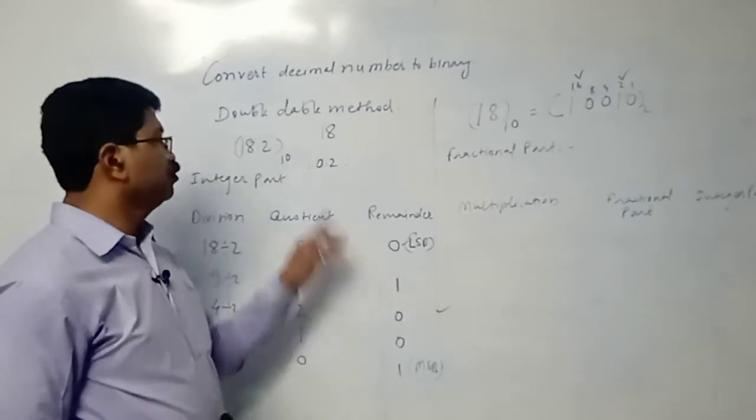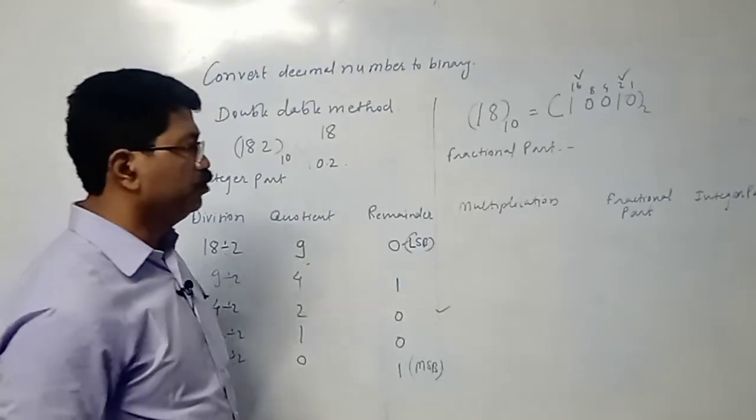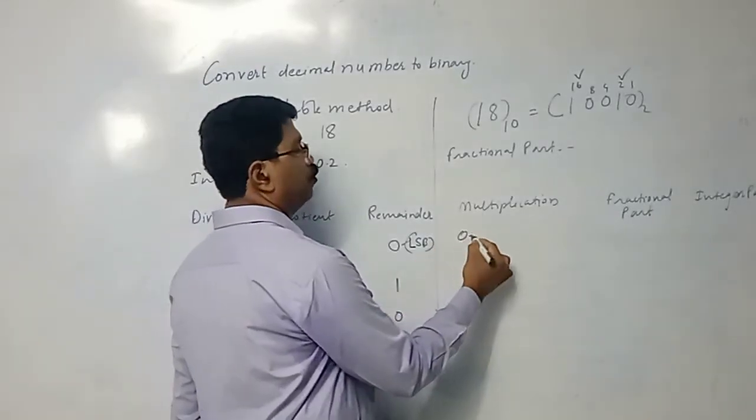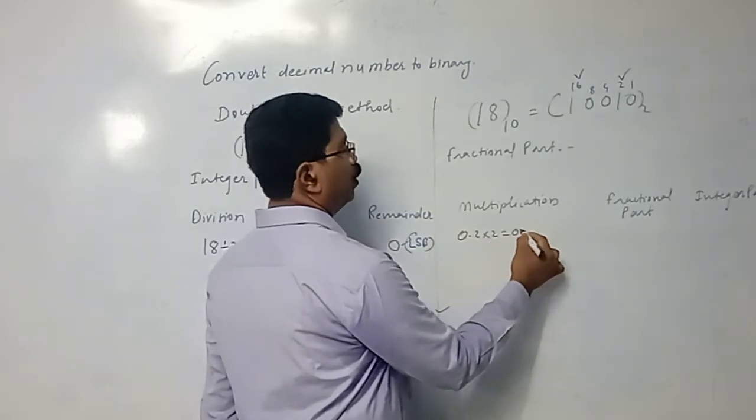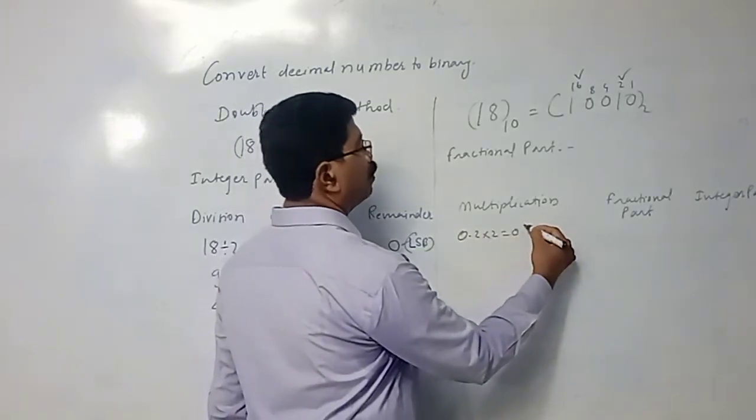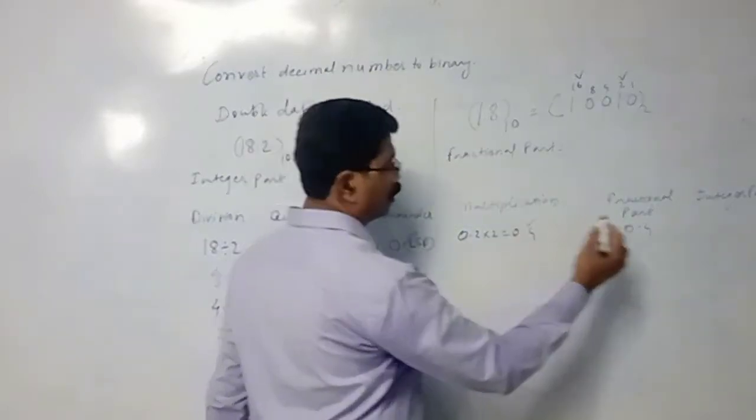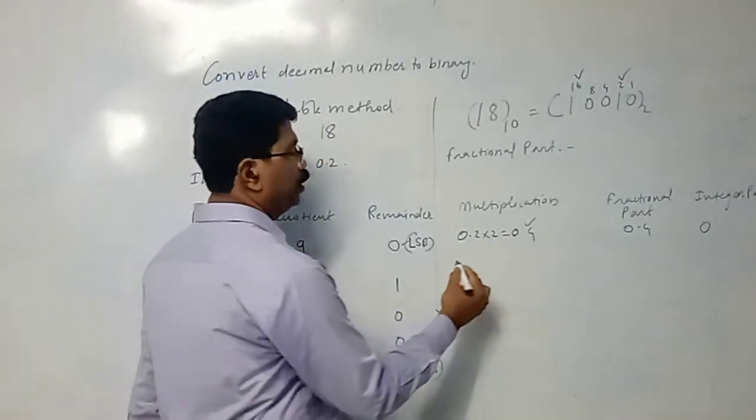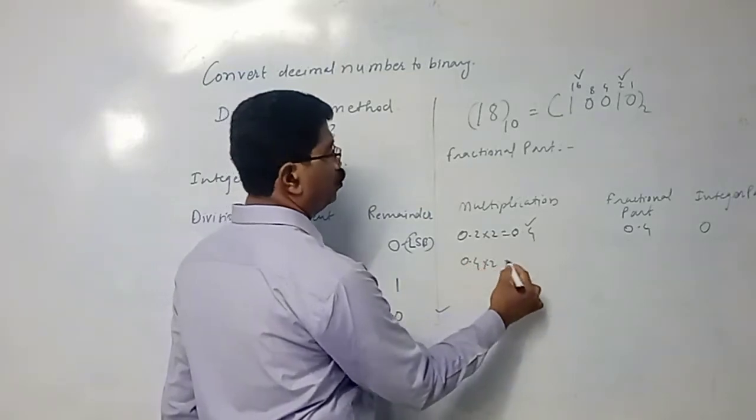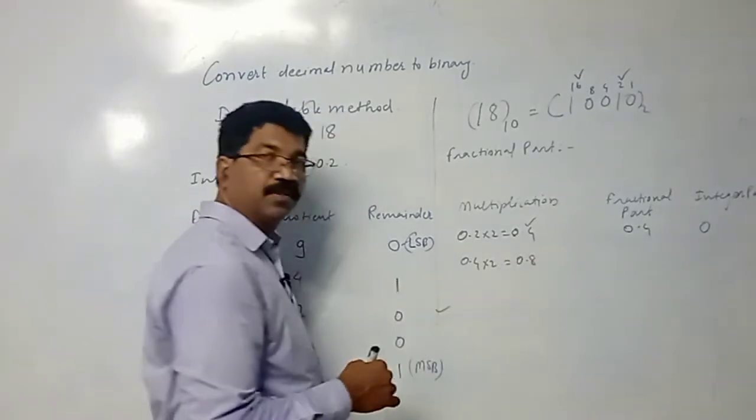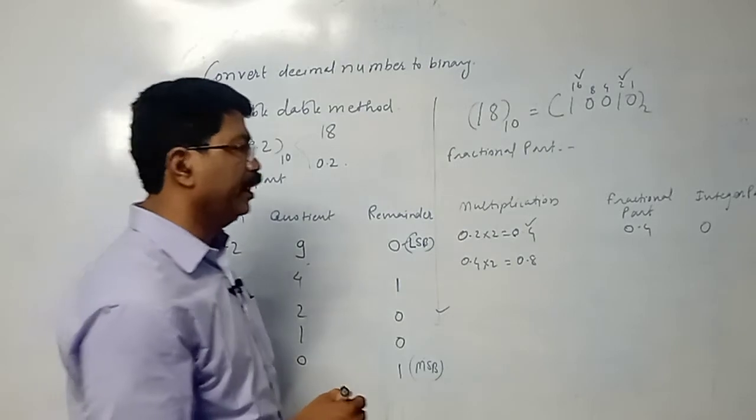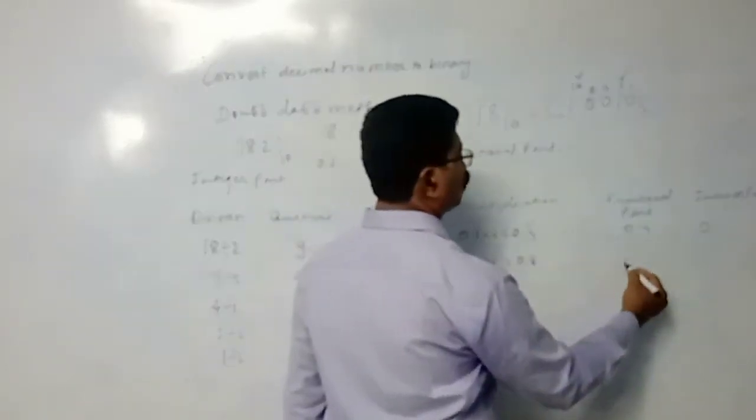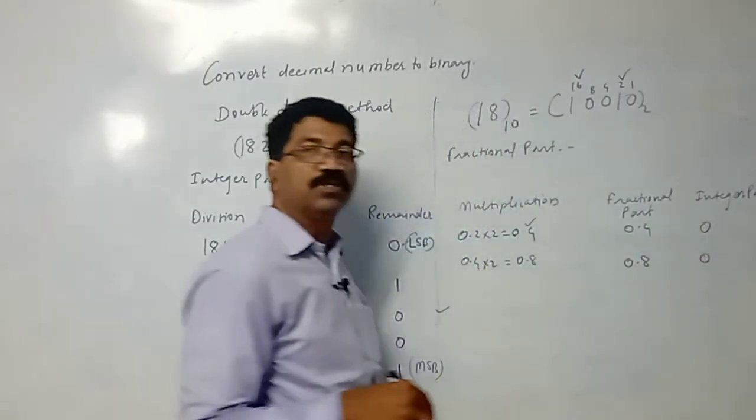Now for the fractional part, which is 0.2, you have to multiply 0.2 by 2, which is 0.4. So the fractional part is 0.4 and the integer part is 0. Then again multiply 0.4 by 2, you will get 0.8. So the fractional part is 0.8, and the integer part is 0.